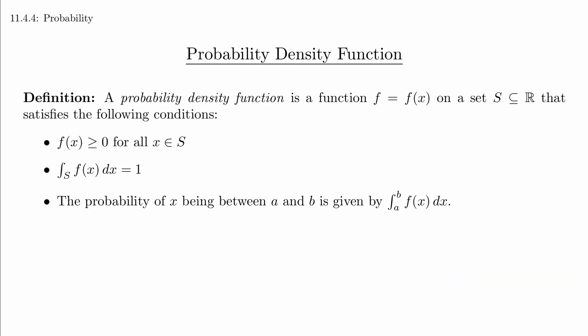For a function f to be a probability density function on a set S, it needs to satisfy the following conditions. f(x) is greater than or equal to 0 for all x in S. This just means that there are no negative probabilities. The integral of f(x)dx over S is 1. This just means that there's a 100% chance that something in S is going to be chosen.